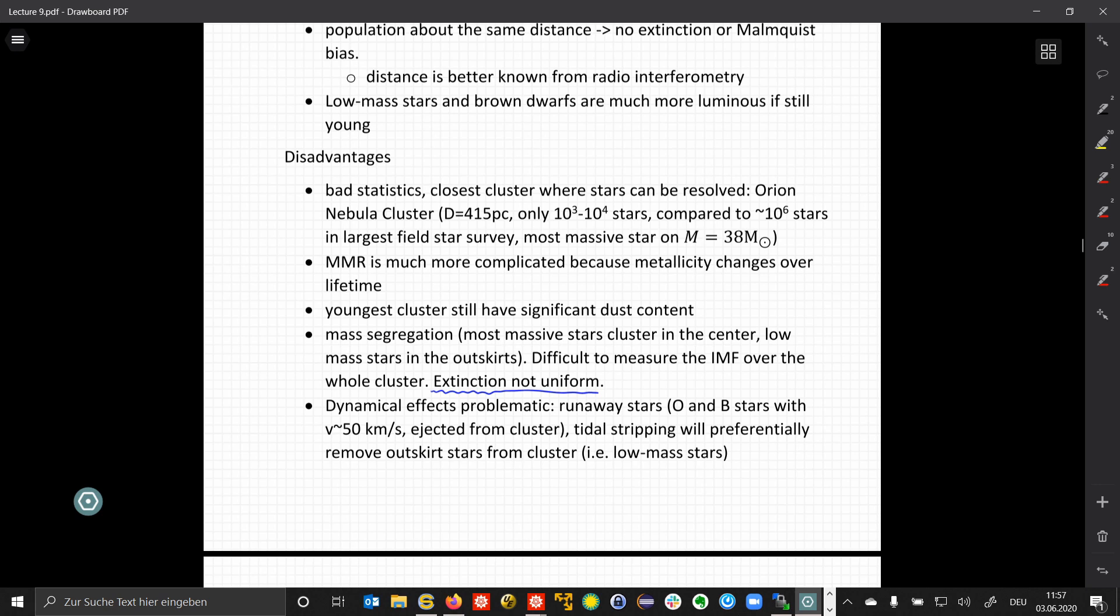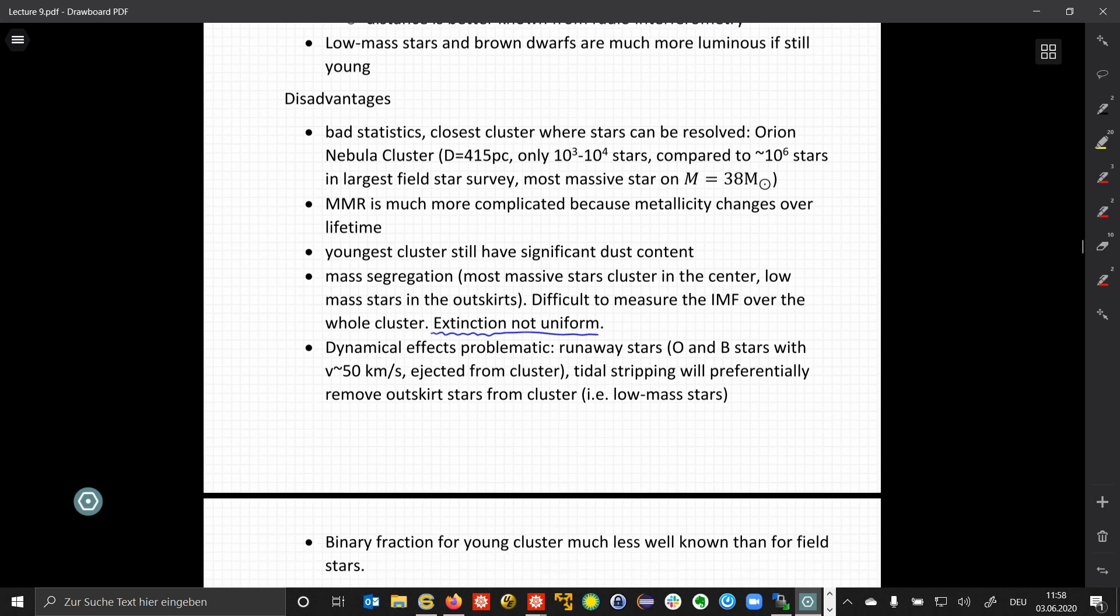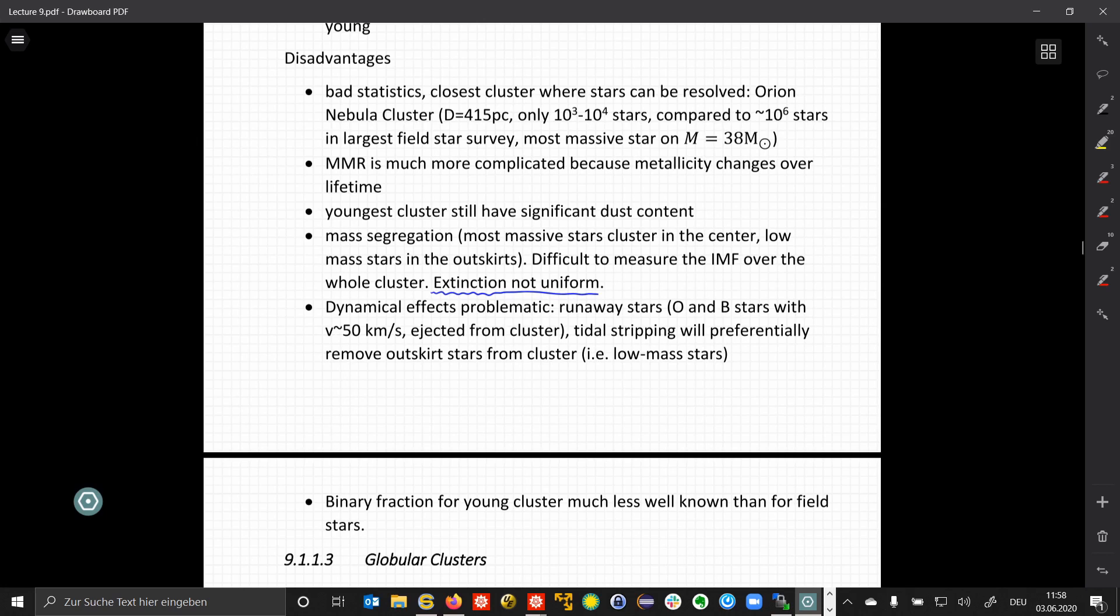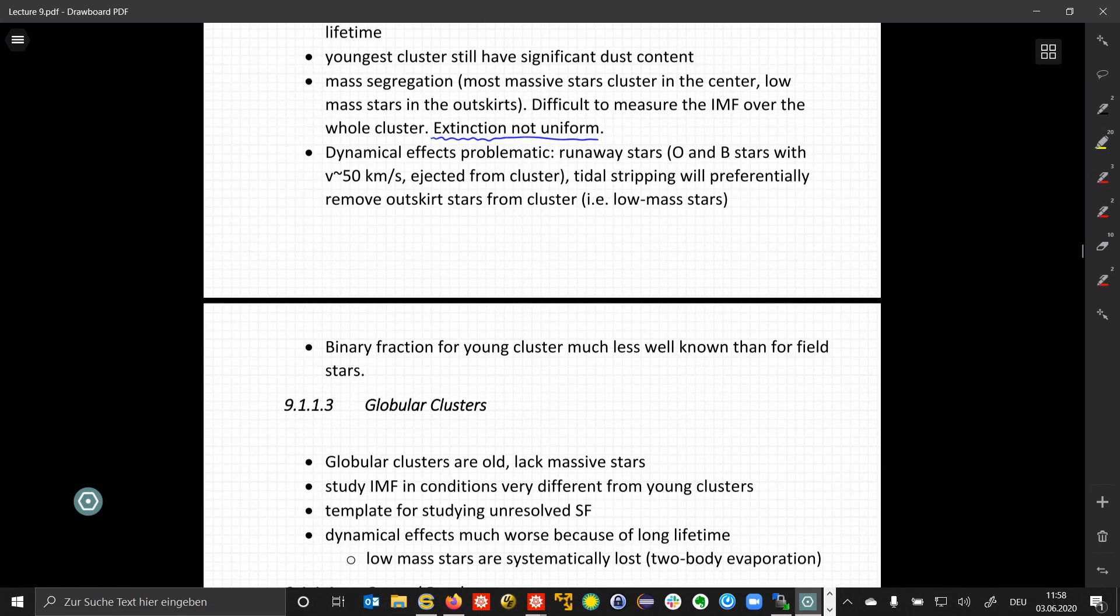We might also have problematic dynamical effects. For example, runaway stars, so O and B stars, the most massive stars, might be traveling away from the cluster with velocities up to 50 km per second, and ejected from the cluster. And we might have gravitational effects, so for example, tidal stripping, that might remove stars at the edge of the cluster from this cluster. So for example, this will mostly affect low mass stars, and therefore somewhat affect also these statistics. We also have the problem that we have much worse statistics and higher uncertainties for binary fractions in young clusters compared to field stars.